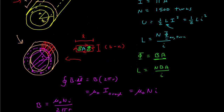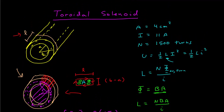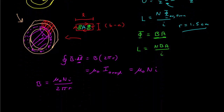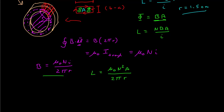We need the mean radius to solve, so let's give ourselves a mean radius of 1.5 centimeters. Now we can find the self-inductance since we know B. The inductance is μ₀ N squared times area divided by 2πr — the two i's cancel out.